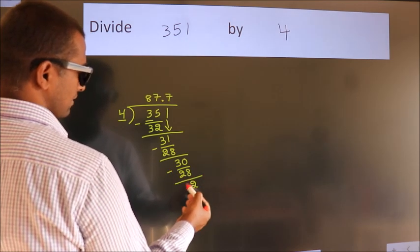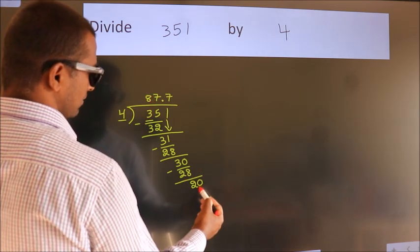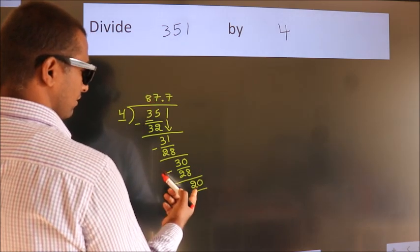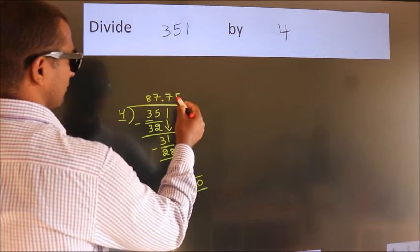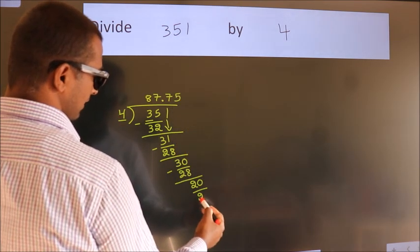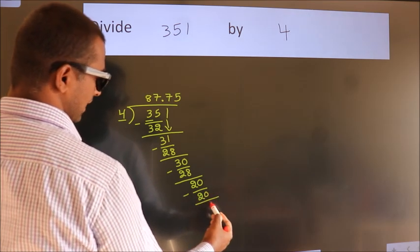After this, we already have the decimal, so directly take 0. 20. When do we get 20 in the 4 table? 4 times 5 is 20. Now we subtract. We get 0.